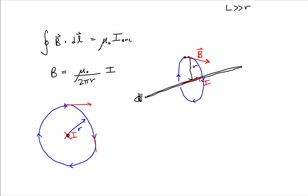The magnetic field at the bottom point is going straight down, at the left point straight to the left, and at the top point straight up. So we have the magnetic field at a particular distance away from the wire, where the vector is tangent at all points on this concentric circle — tangent at this point, tangent at this point, tangent at this point, and tangent at this point.